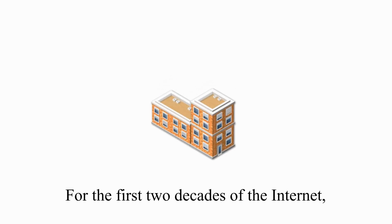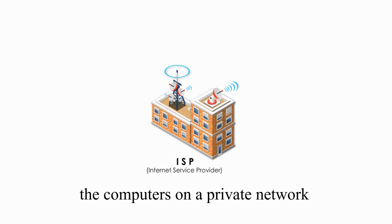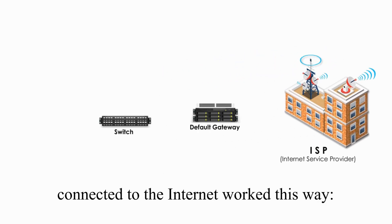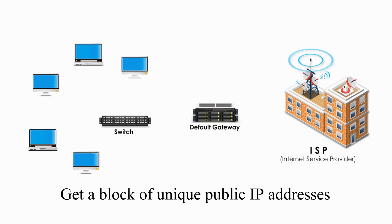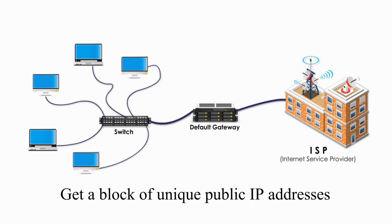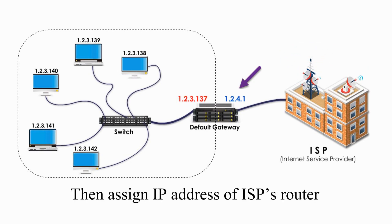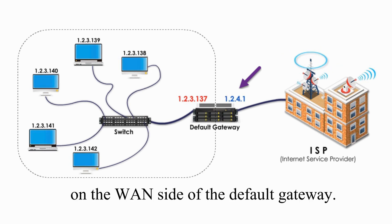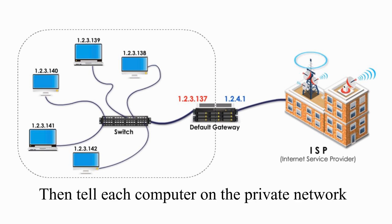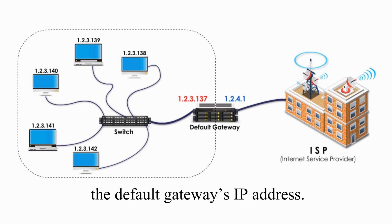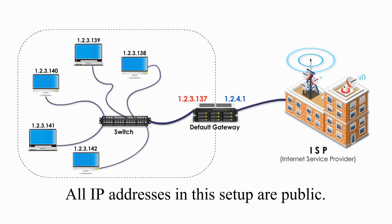For the first two decades of the Internet, the computers on a private network connected to the Internet worked this way: get a block of unique public IP addresses and assign them to each computer and the LAN side of the default gateway. Then assign the IP address of the ISP's router on the LAN side of the default gateway, and tell each computer on the private network the default gateway's IP address. All IP addresses in this setup are public IP addresses.